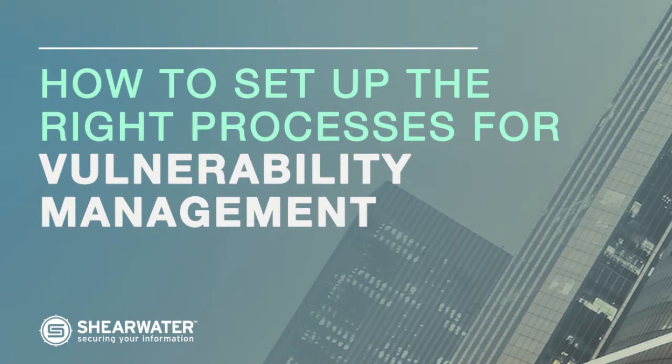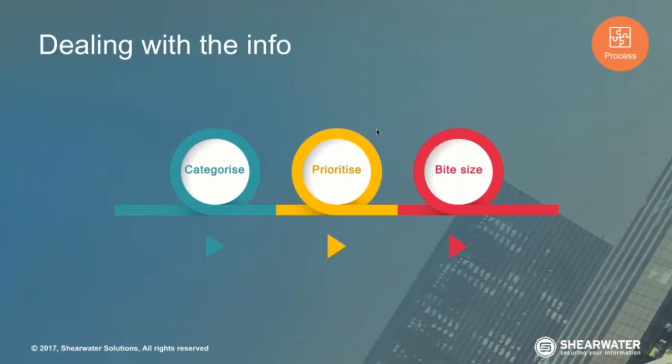On the process side of things, you need to deal with all the information. This is where the real challenge comes in. Anybody can put a scanning engine in - that's not really that hard. It's what you do with it afterwards that generates the work for the organisation. The process we follow is to categorise, prioritise, and then bite-size it. The main reason for bite-sizing is because the information can be overwhelming - you need to break it down.